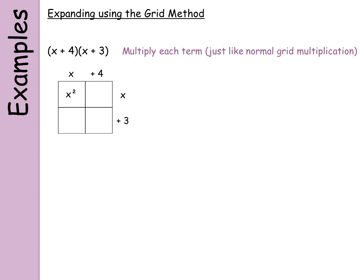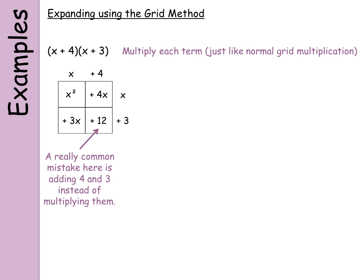So x times x gives me x squared, 4 times x gives me 4x, 3 times x gives me 3x, and 4 times 3 gives me 12. A really common mistake here is adding 4 and 3 to give you 7 instead of multiplying to give you 12. Make sure you don't make that mistake.